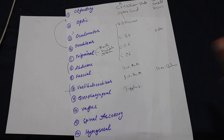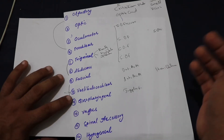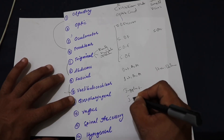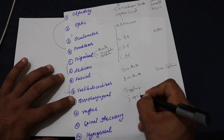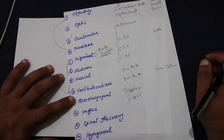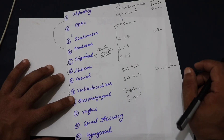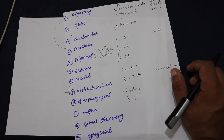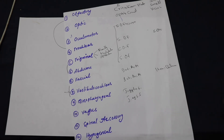Number ten is the vagus nerve, which exits from the jugular foramen. It has vast functions: it supplies the external ear, larynx, pharynx, and carries taste from the epiglottis. It also supplies smooth muscles of the pharynx, larynx, and most of the gastrointestinal tract.